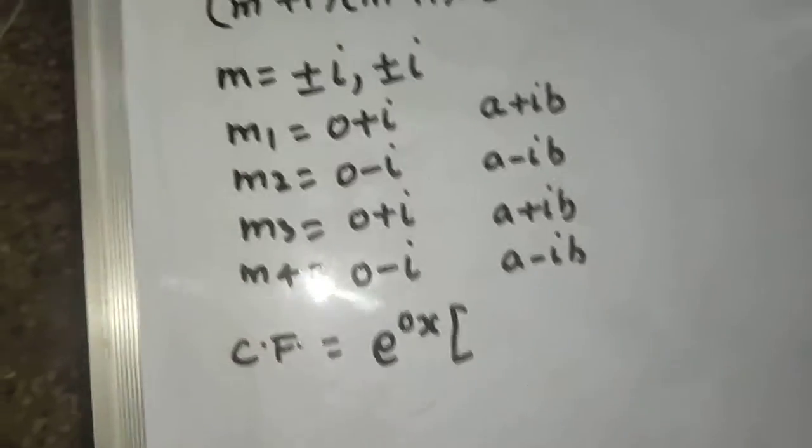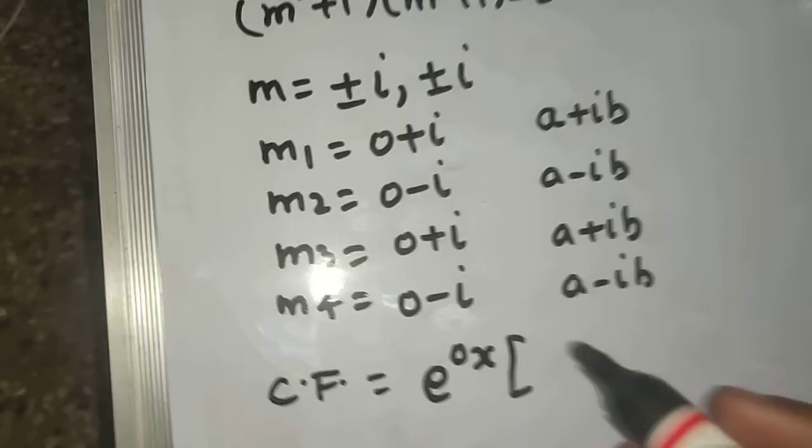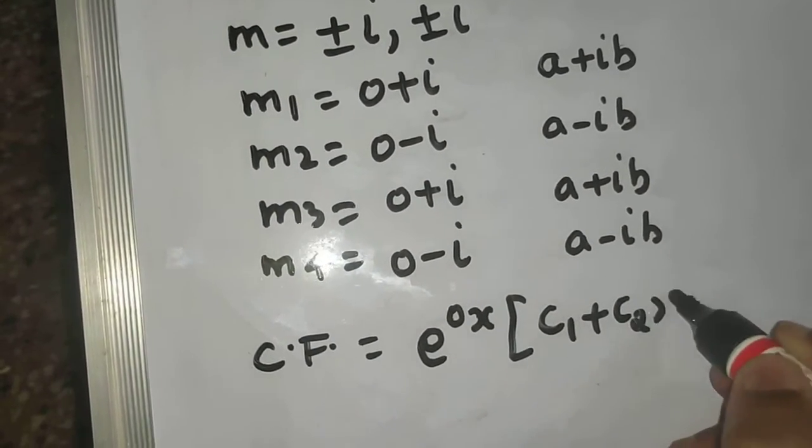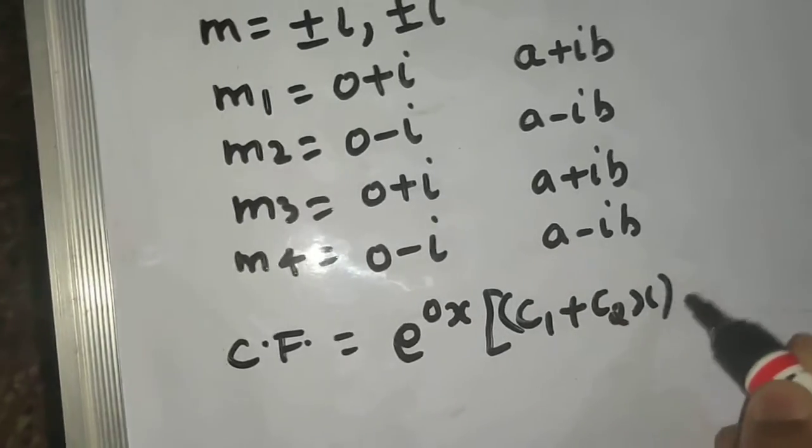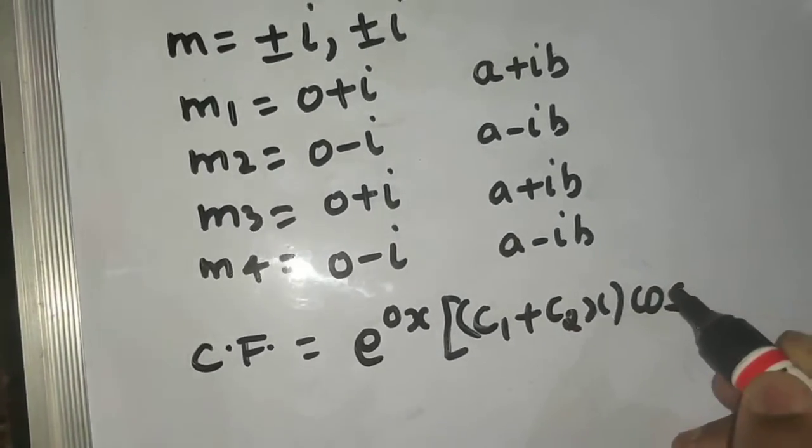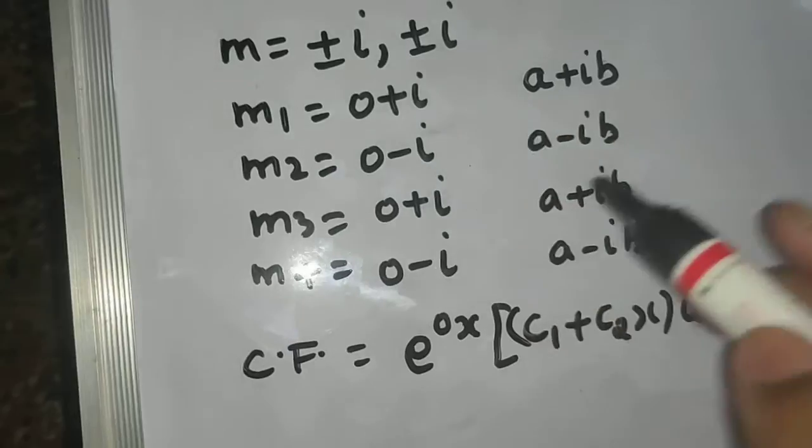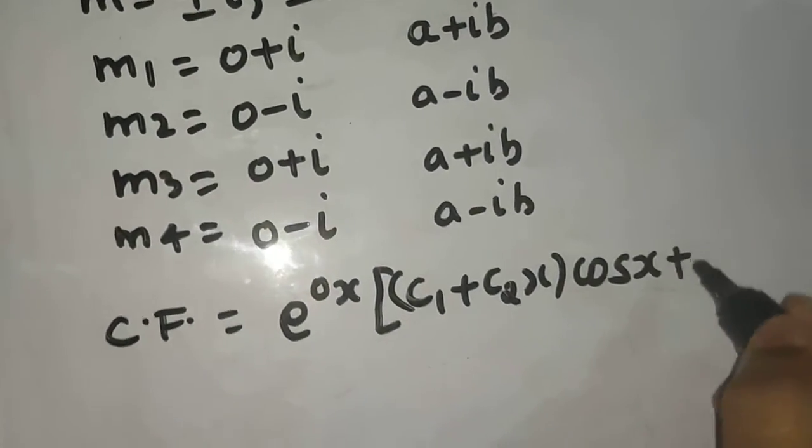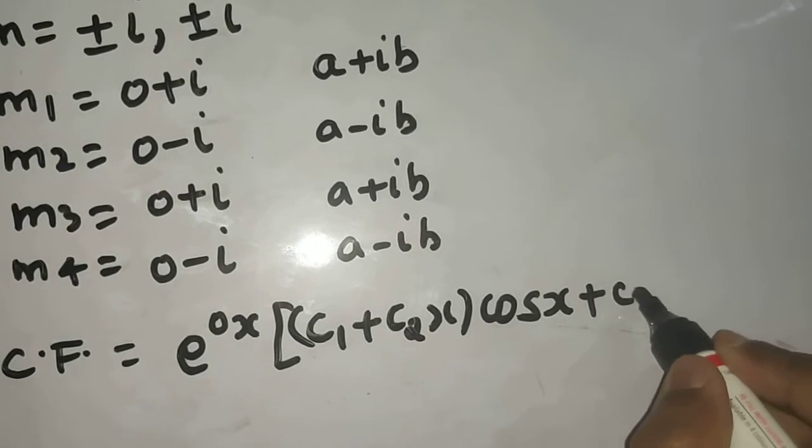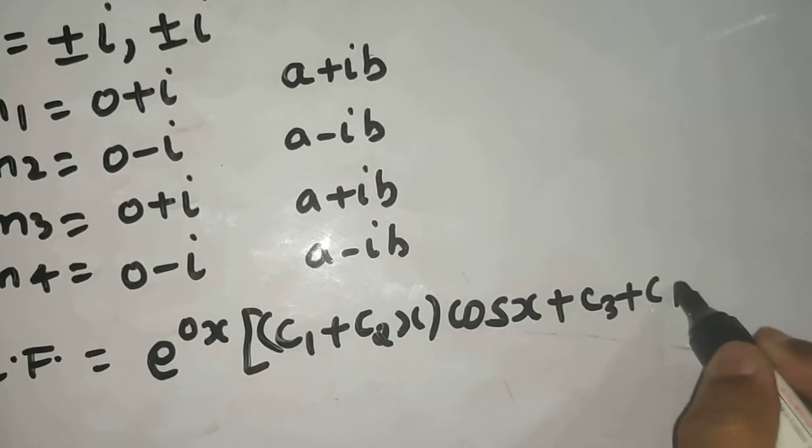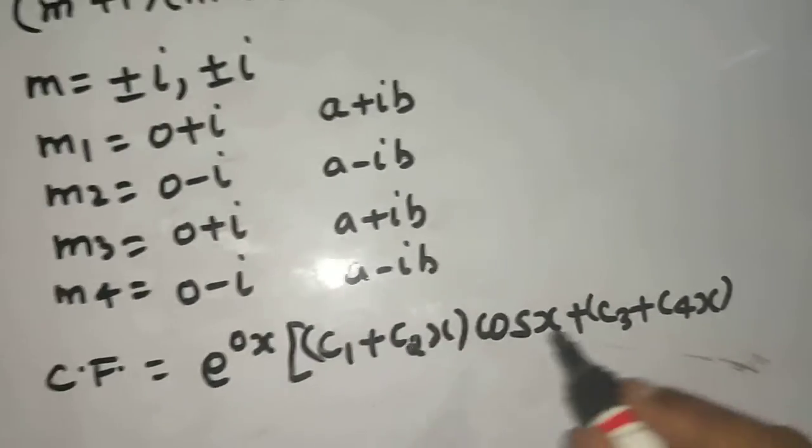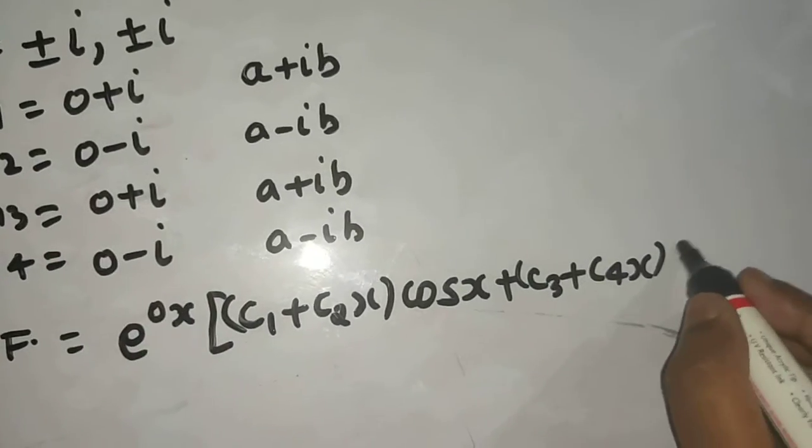Inside since the roots are repeating you will write c1 plus c2 times x. And with that you will write cos bx. What is b in each case? 1 so cos bx will be cos x only plus c3 plus c4 times x whole multiplied by sin bx.